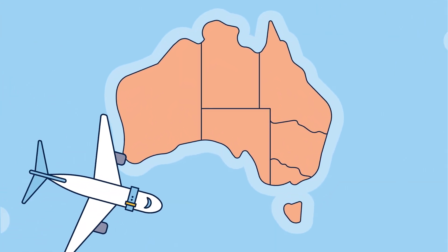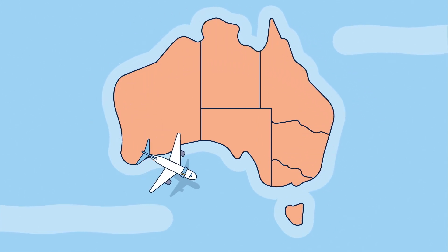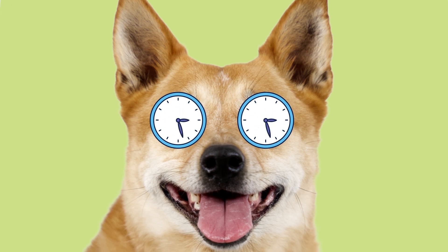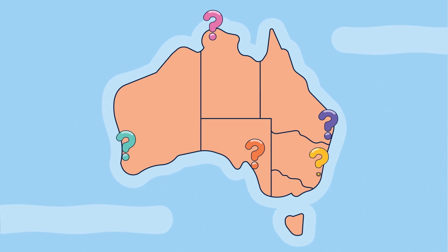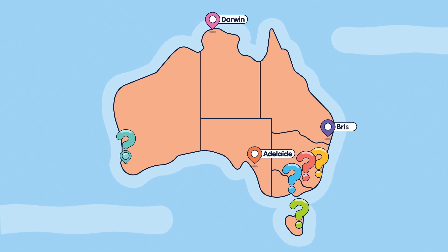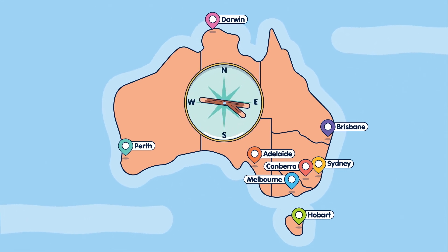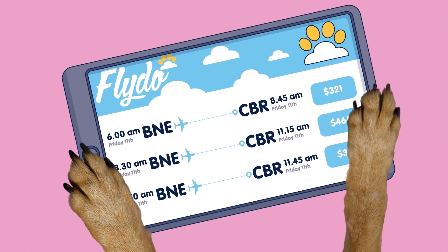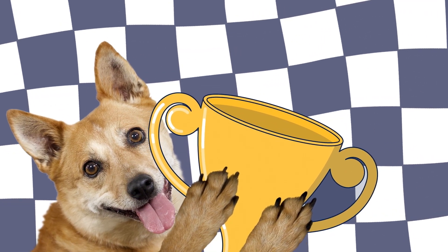In this investigation, you're going to find out how long it takes to fly around Australia, and you'll figure out if it's possible to do it in less than 48 hours. You'll need to start your journey in the nearest capital city to your school, and make sure you stop at all the state and territory capital cities before returning to your nearest capital city. Which direction are you going to travel in, and how are you going to schedule your flights? Have you got what it takes to find the best route to take you around Australia as fast as possible?